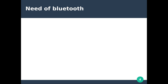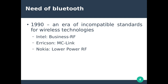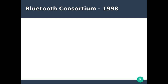Now, what is the need for the technology? In 1990, which was an era of incompatible standards for wireless technology, different companies and industries started using their own forms of wireless communication. Intel was using Business RF, Ericsson was using MC-Link, and Nokia was using low-power RF communication. There was a need for standardization to avoid fragmentation of technologies, and with this goal the Bluetooth Consortium was formed in 1998.